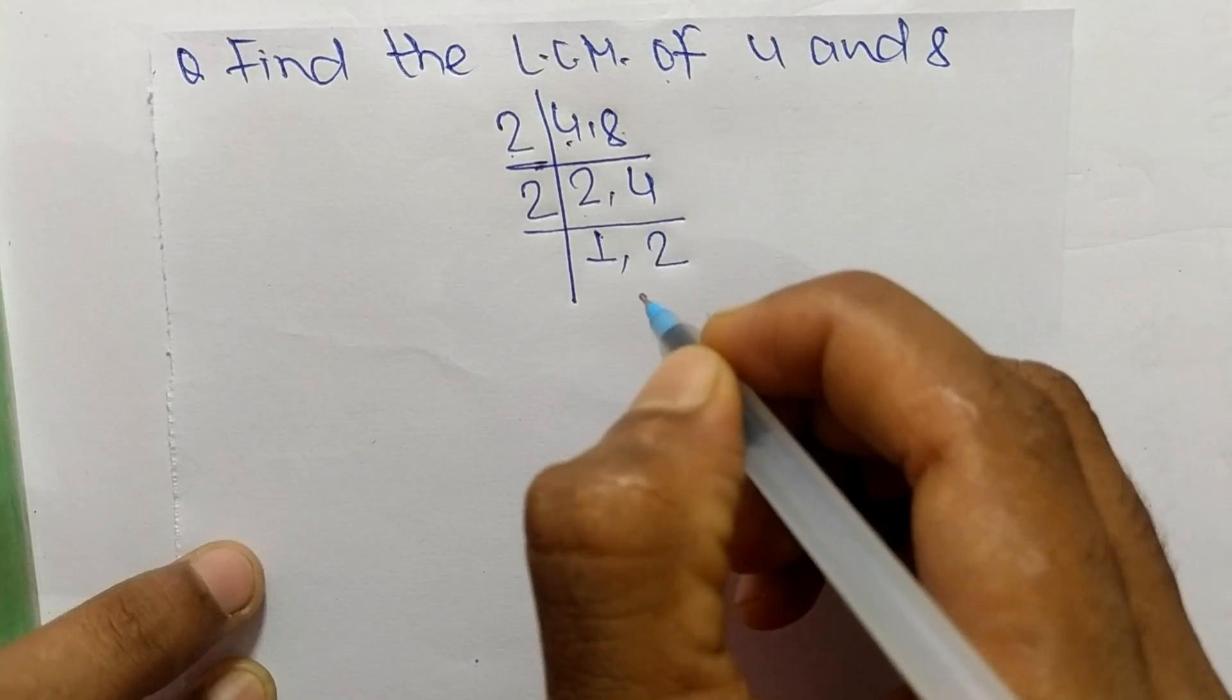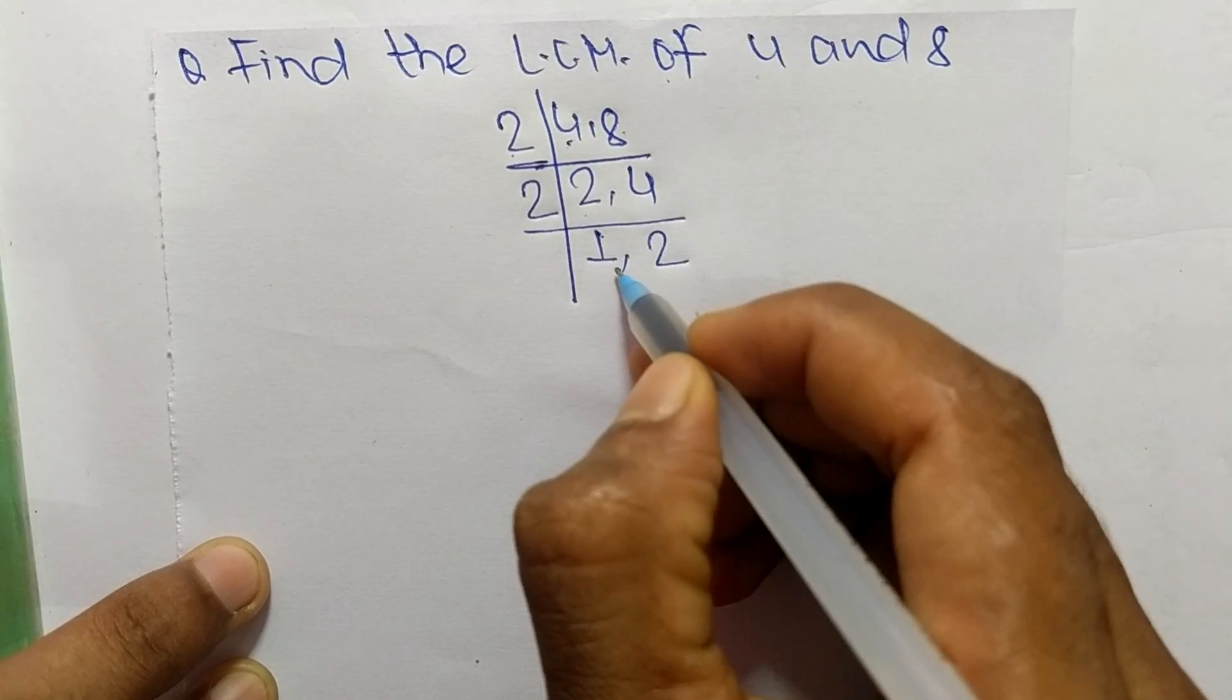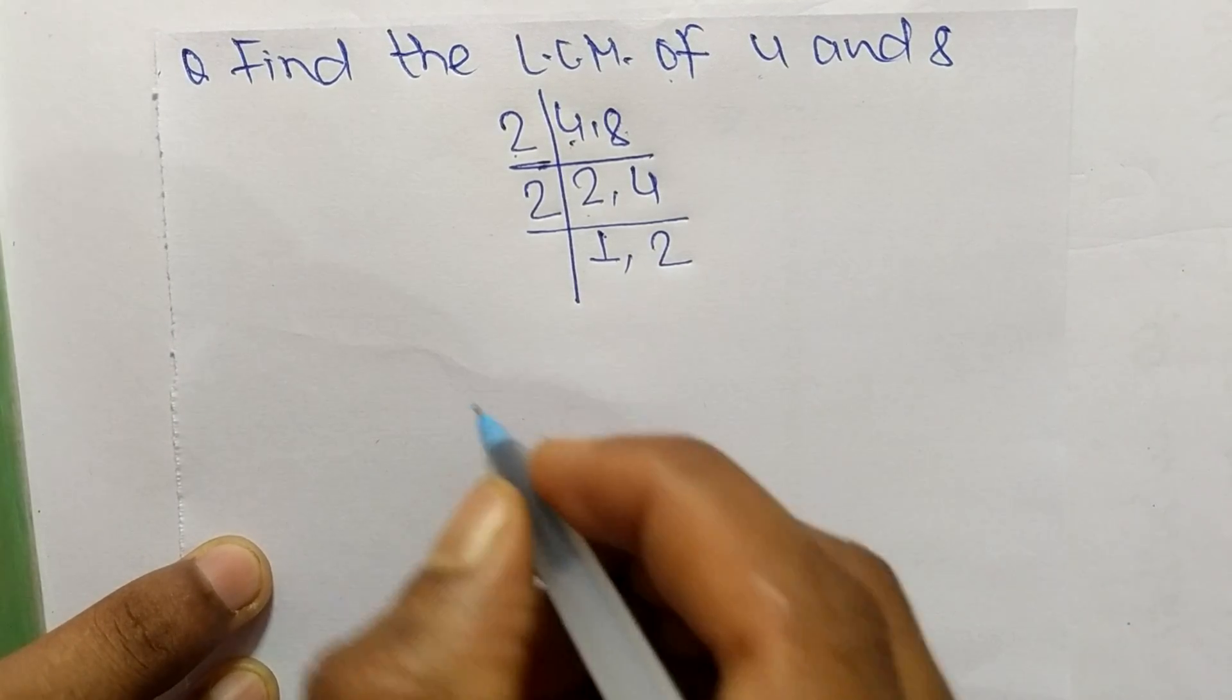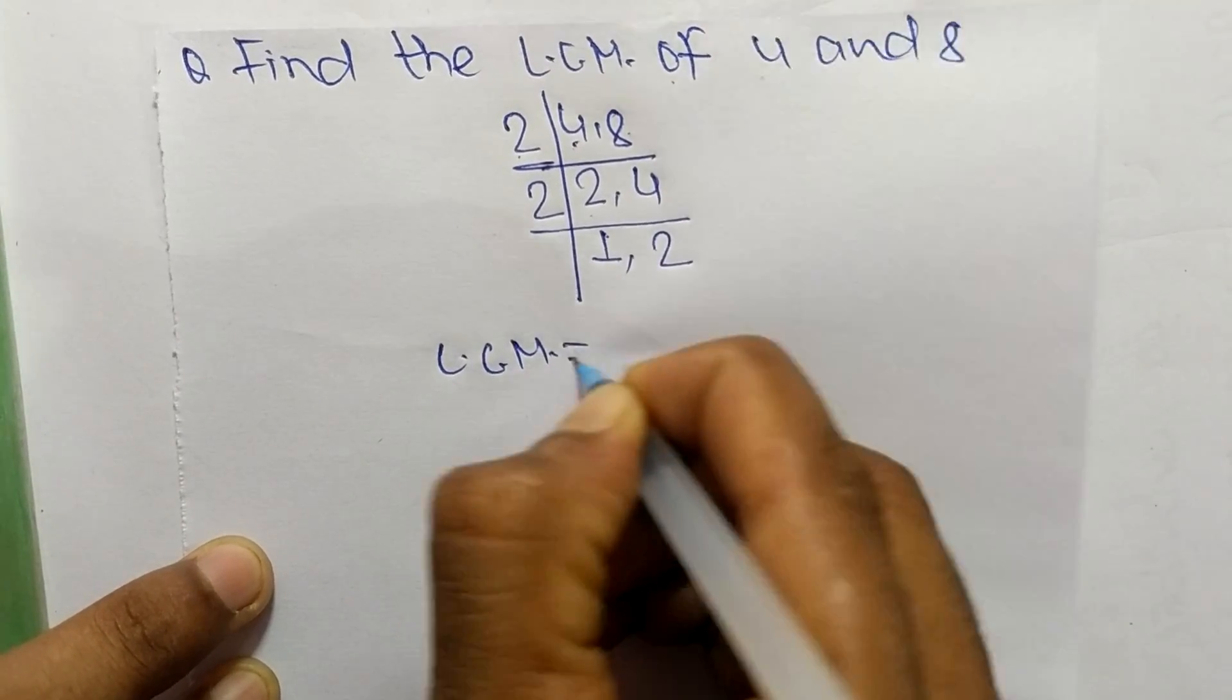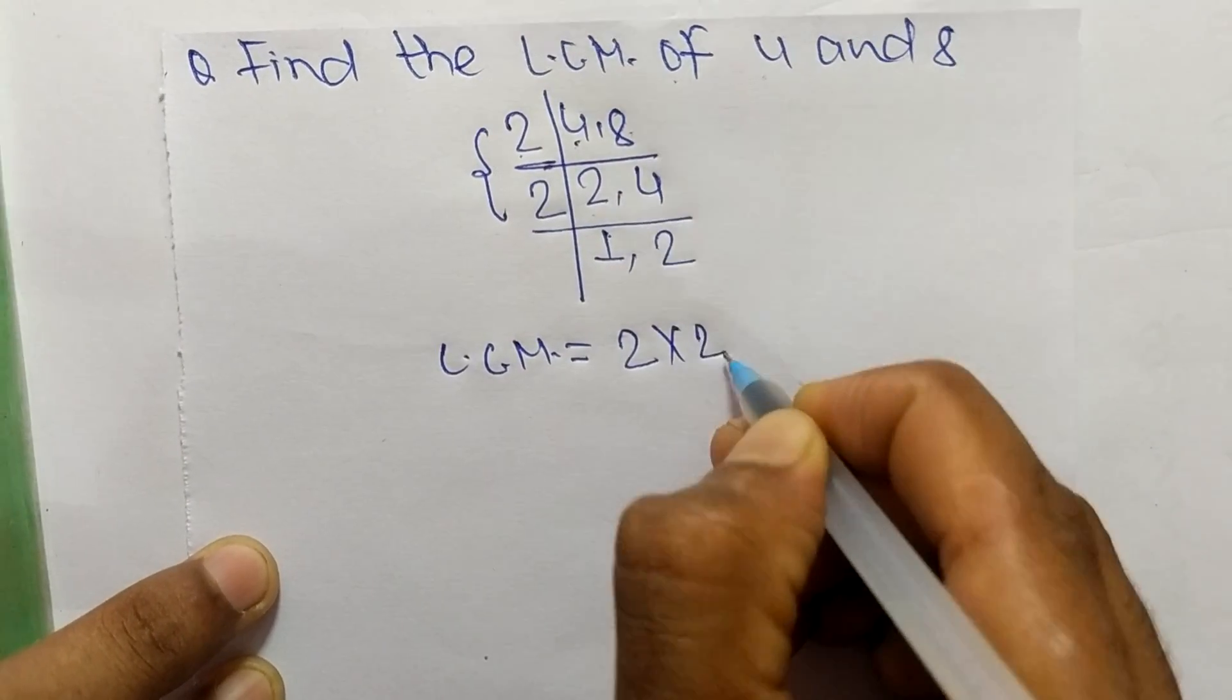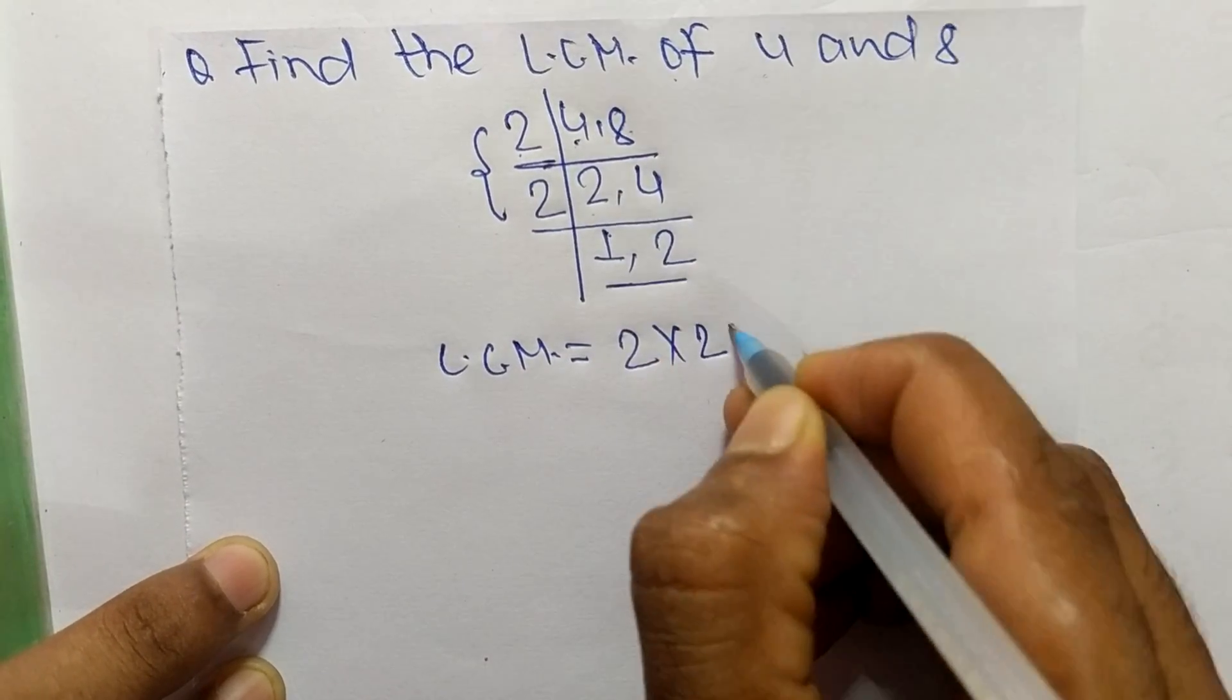2 times 2 means 4. Now we have 1 and 2, which are not exactly divisible by the same number. So we can write LCM equals, from this part it is 2 times 2, and from here we